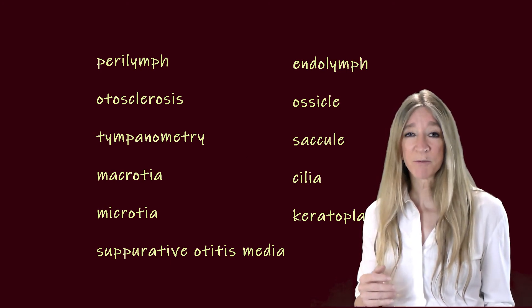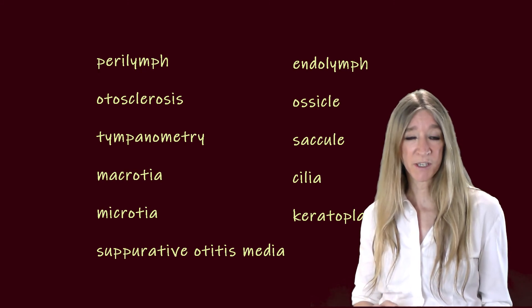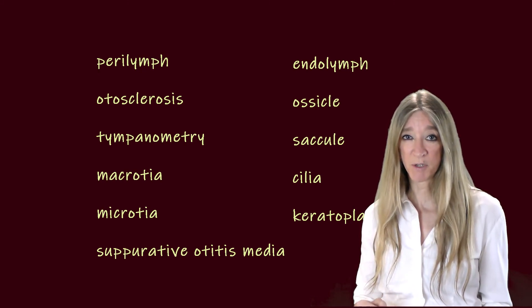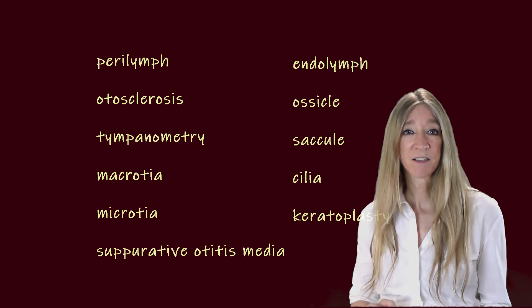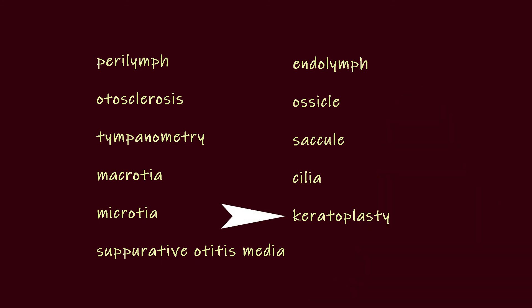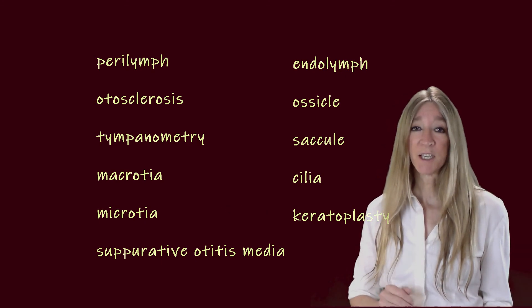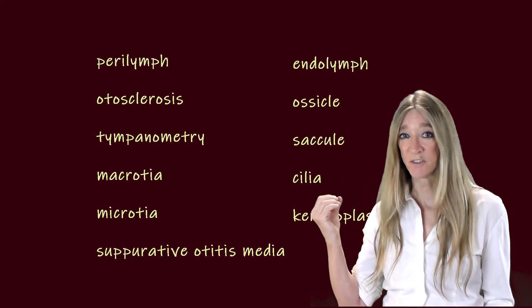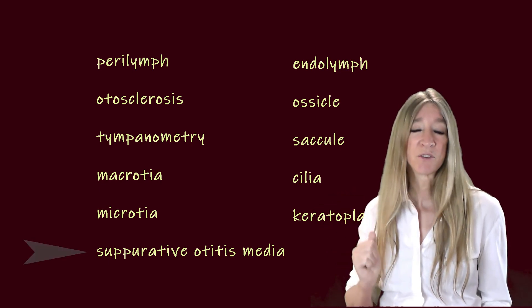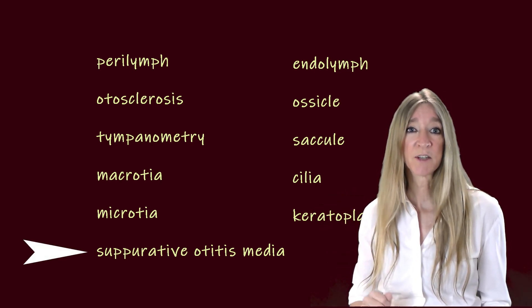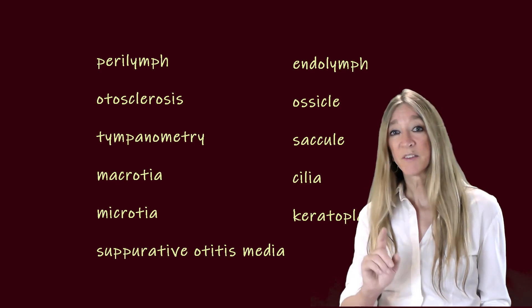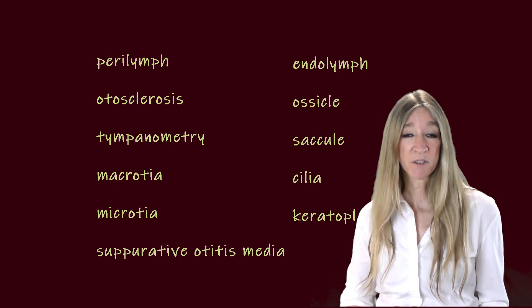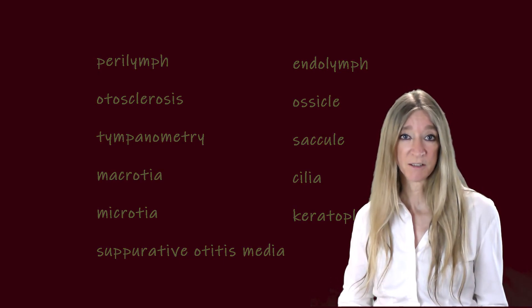How about a term for surgery carried out on the cornea, especially corneal transplantation? Keratoplasty. And how about a term for inflammation or infection of the middle ear causing a persistent discharge? Suppurative otitis media — middle ear. This is a condition that may have to be treated with a mastoidectomy. So there are some terms and roots to get you started on a study of eyes and ears.